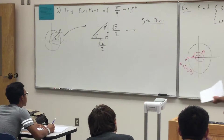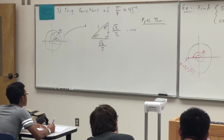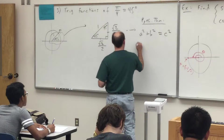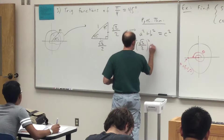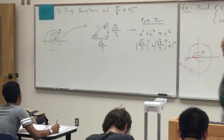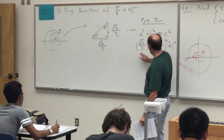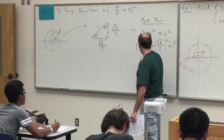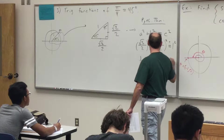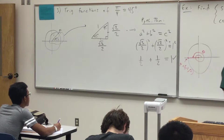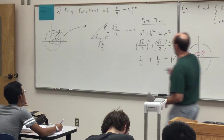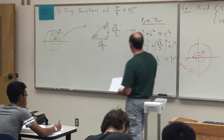We can verify with the Pythagorean theorem: a² + b² = c². With a = root 2 over 2 and b = root 2 over 2, the square of root 2 over 2 is 1/2, and 1/2 + 1/2 = 1, which equals 1 squared. That verifies the dimensions. So since it's an isosceles triangle, each leg measures root 2 over 2. That tells us P has coordinates (root 2 over 2, root 2 over 2).